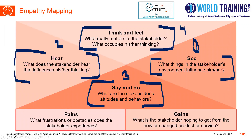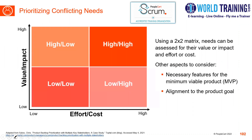After empathy mapping, we should think of ensuring how you prioritize the conflicting needs. If people have any conflicting needs, we need to work out a way to prioritize those. In the conflicting need — and this is an important slide, there can be a question on this — we should create a two-by-two matrix which talks about value and impact and the overall effort and cost associated.